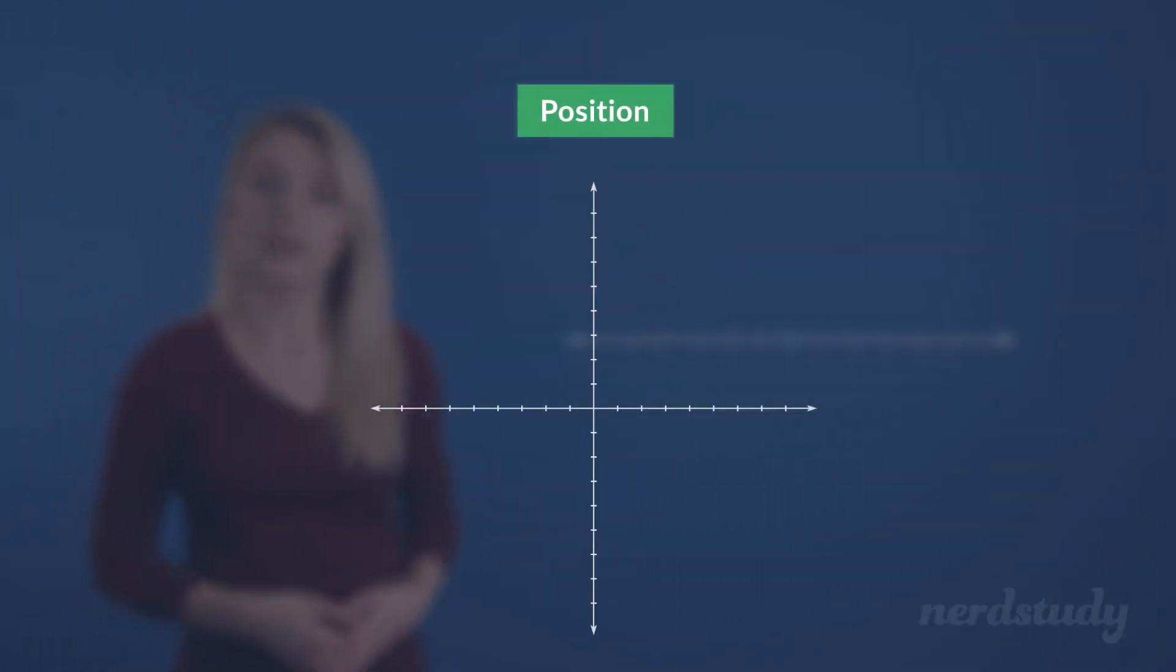In two dimensions though, direction is not so easily specified. For example, here's a particle located 1 meter south and 2 meters east of the origin.